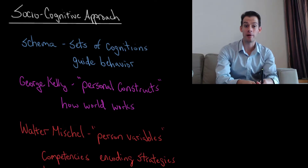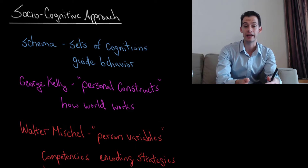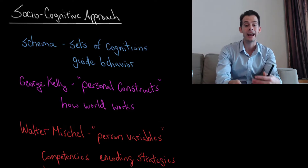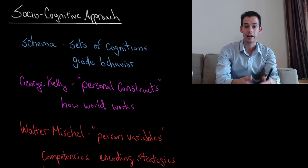Hi, I'm Michael Corayer and this is Psych Exam Review. In the past few videos we've looked at a biological approach for understanding personality. In this video we're going to switch and look at a socio-cognitive approach, which is going to emphasize the role of society and our own thinking on how we express our personality. An important idea for this is schema.